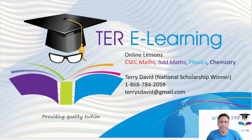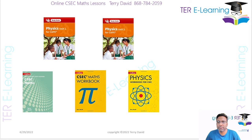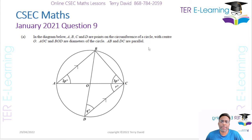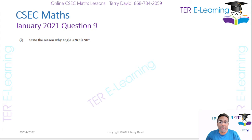Terry here again. In this video I'm going to be looking at the January 2021 Question 9. In the diagram below, A, B, C are points on the circumference of the circle with center O. AOC and BOD are diameters, and AB and DC are parallel.